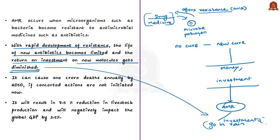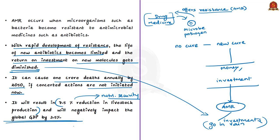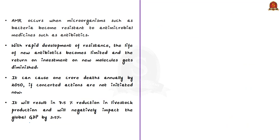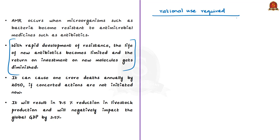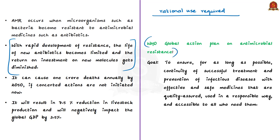AMR is a serious challenge as it can cause around 1 crore deaths annually by 2050 if concerted actions are not taken. It will result in a 7.5% reduction in livestock production, weakening the nutrition security of the nation and the world, and will negatively impact global GDP by 3.5%. Given the challenges in developing new cures, the only option is to use available antibiotics carefully to ensure their efficiency for as long as possible. The world has a roadmap from the WHO — the Global Action Plan on Antimicrobial Resistance — and all countries must develop their national action plans in alignment with it. The goal is to ensure continuity of successful treatment and prevention of infectious diseases with effective, quality-assured, safe medicines accessible to all.